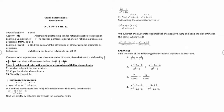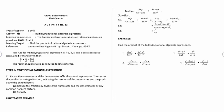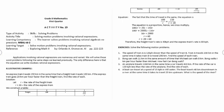Activity number eleven is adding and subtracting similar rational algebraic expressions. Activity number twelve is adding and subtracting dissimilar rational algebraic expressions. Activity number thirteen is multiplying rational algebraic expressions. Activity number fourteen is dividing rational algebraic expressions. Activity number fifteen is solving motion problems involving rational expressions.